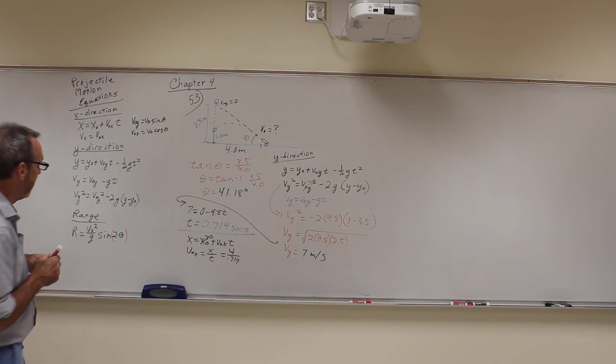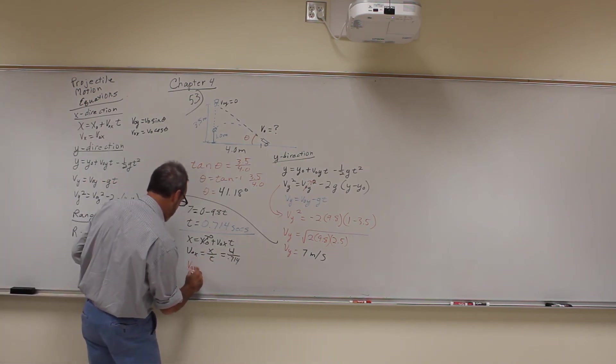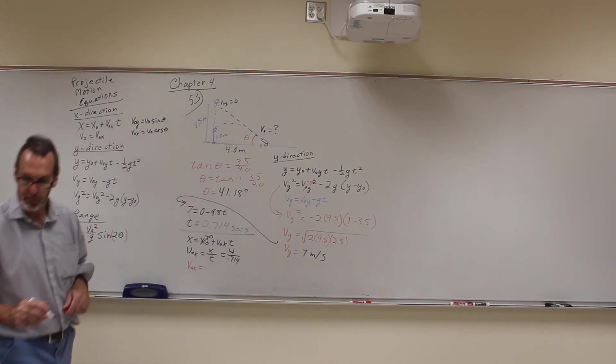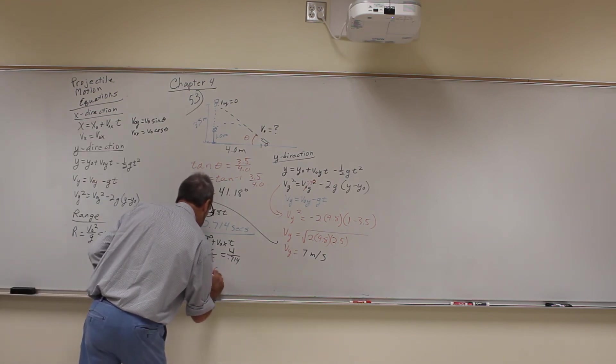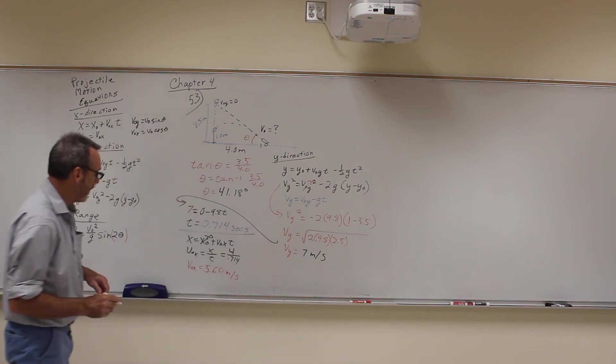We get that the velocity in the x direction is equal to 5.60 meters per second.